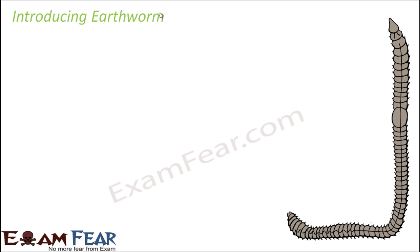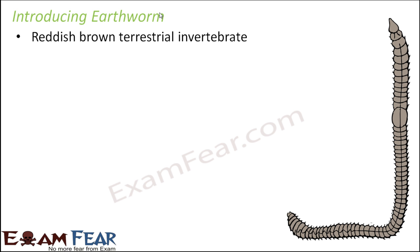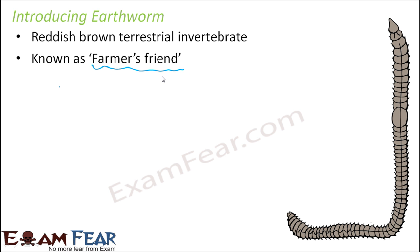First, we'll introduce the earthworm. It is a reddish brown terrestrial invertebrate. Terrestrial because it lives on land and not in water. Invertebrate because it does not have a vertebral column. It is often known as the farmer's friend — we will revisit why earthworm is called a farmer's friend at the end of our discussion on earthworm, once you know this organism well.